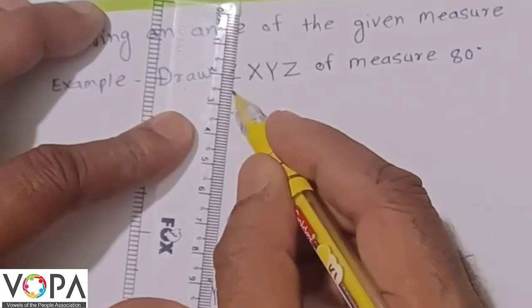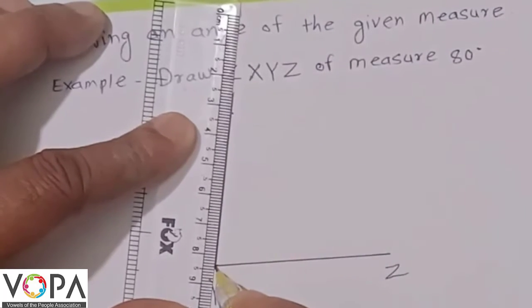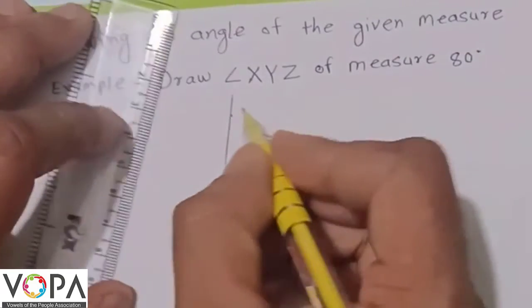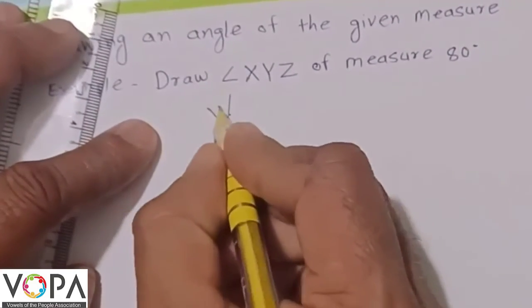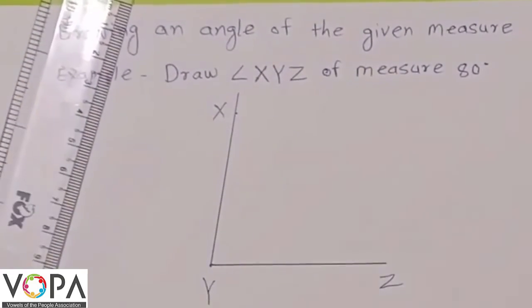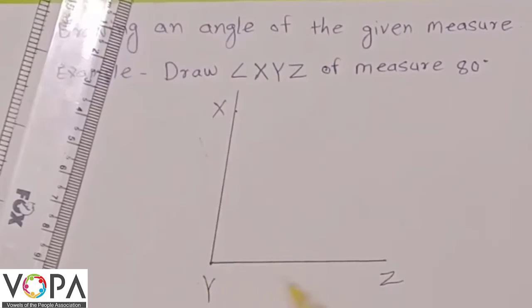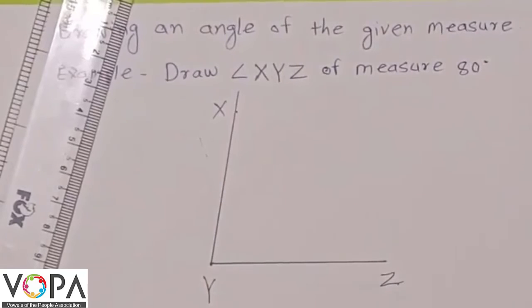Draw arm YX and name the point X. Now angle XYZ is 80 degrees.